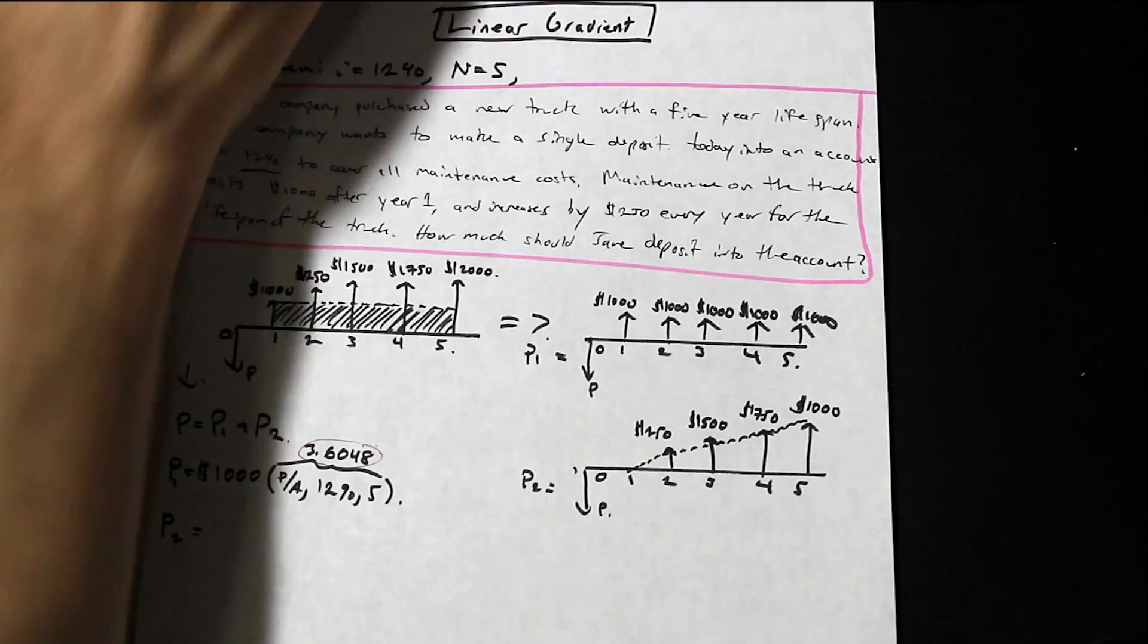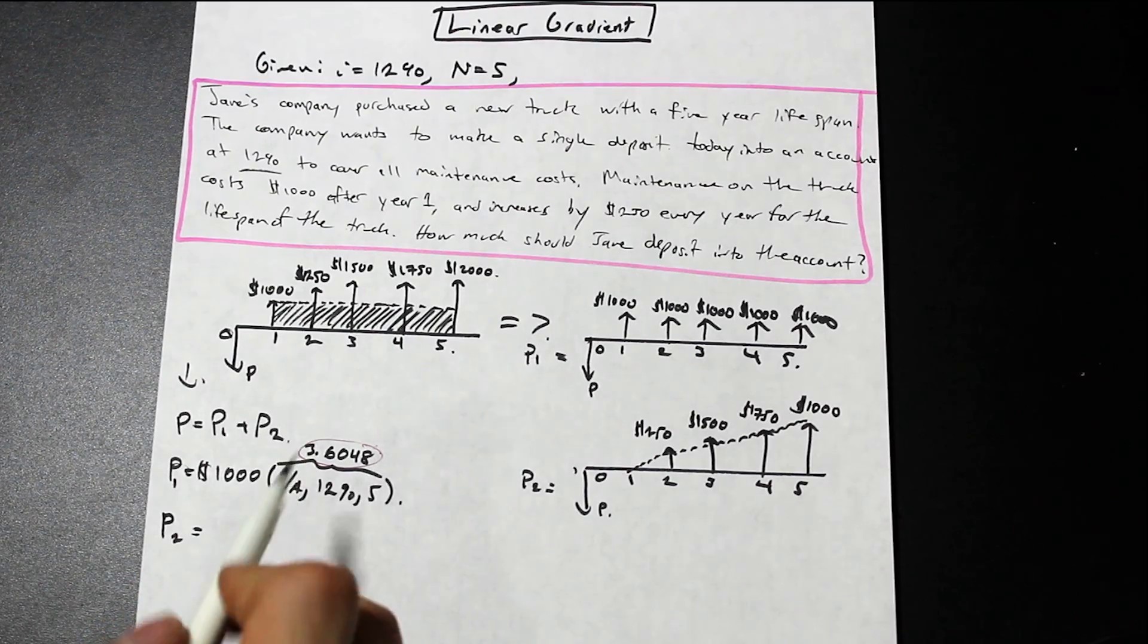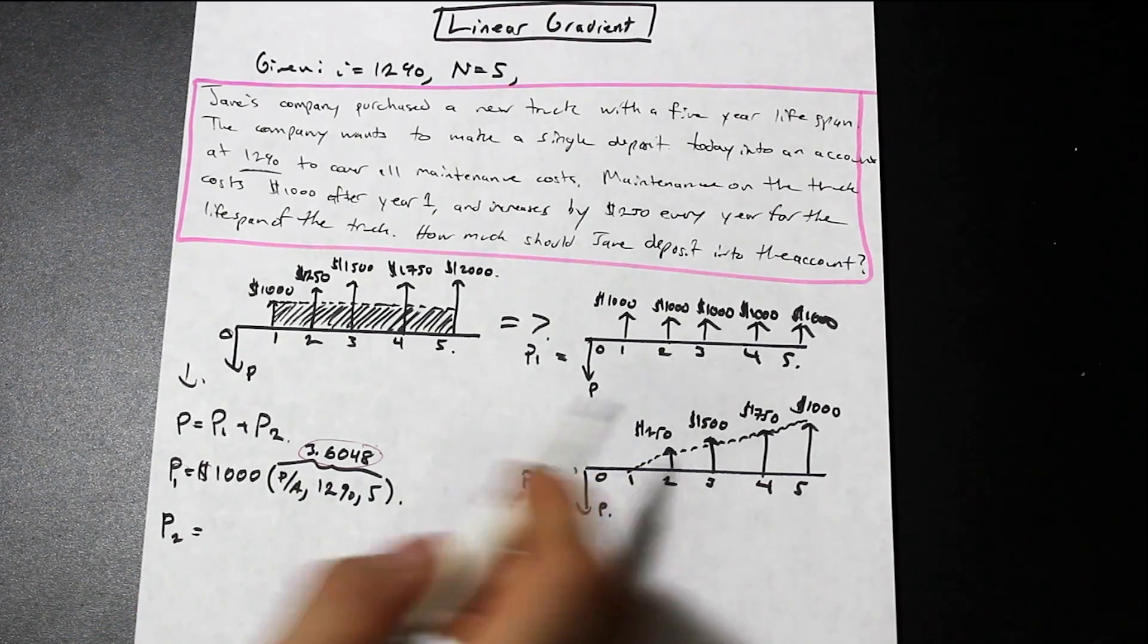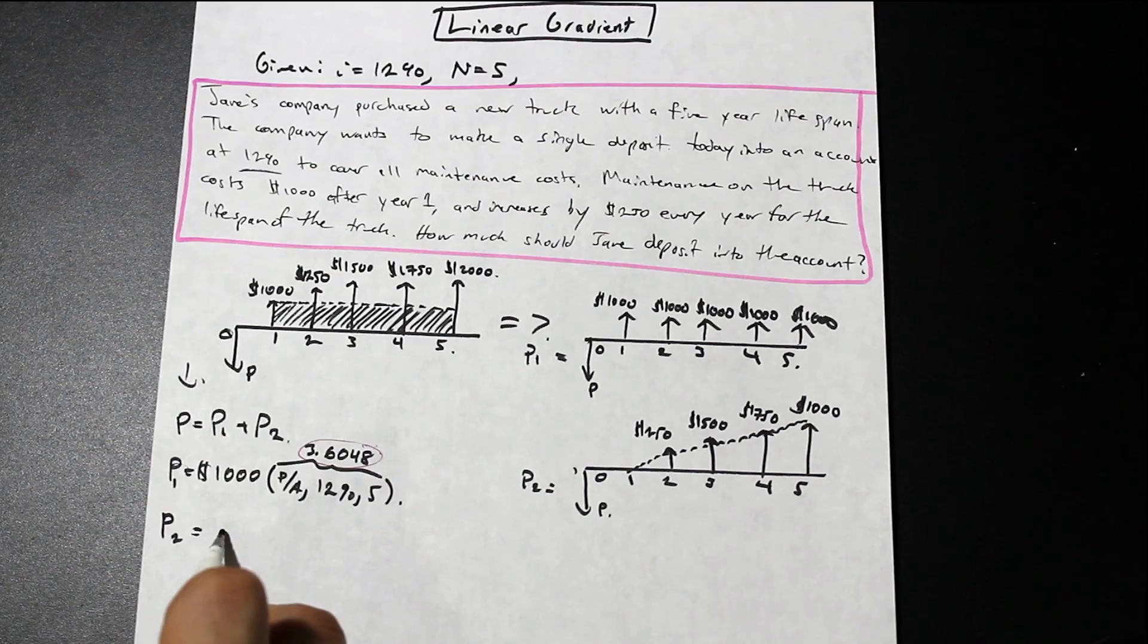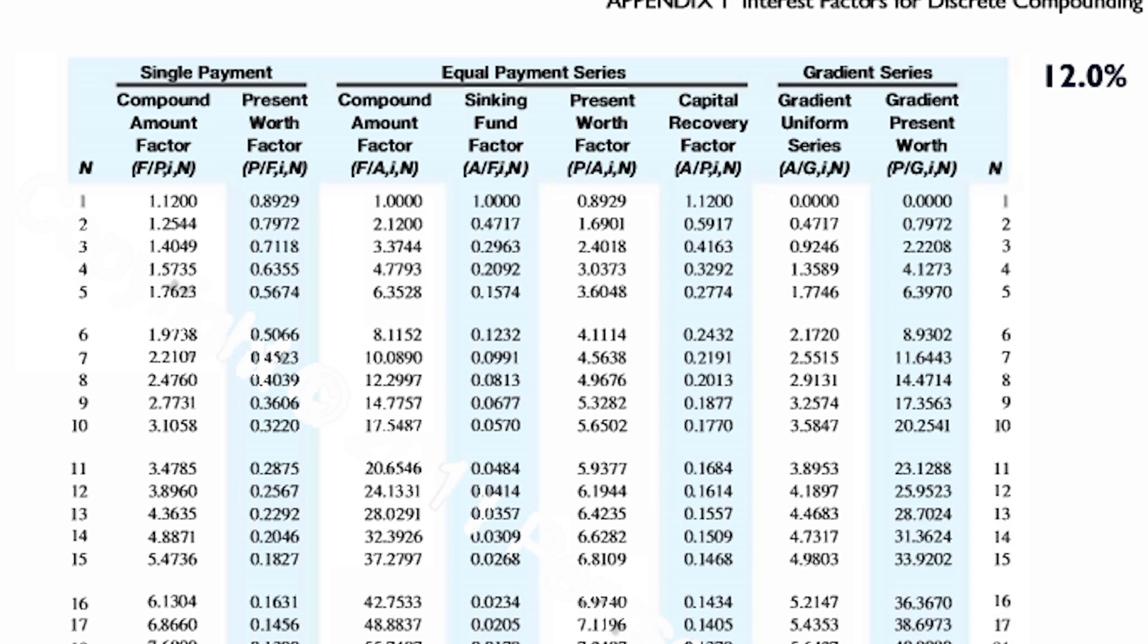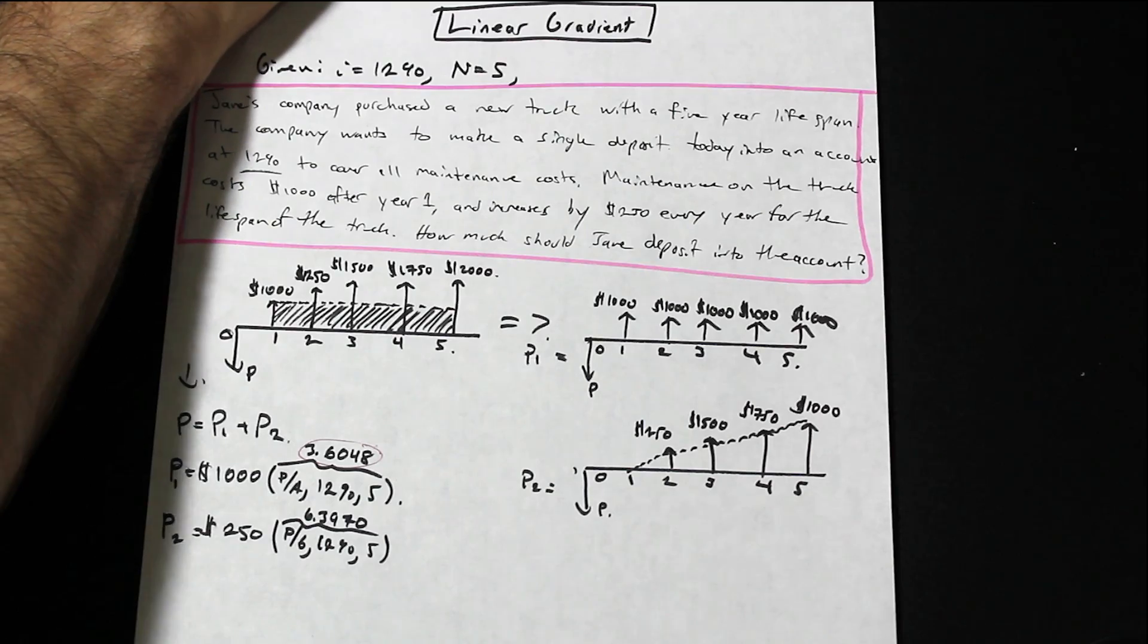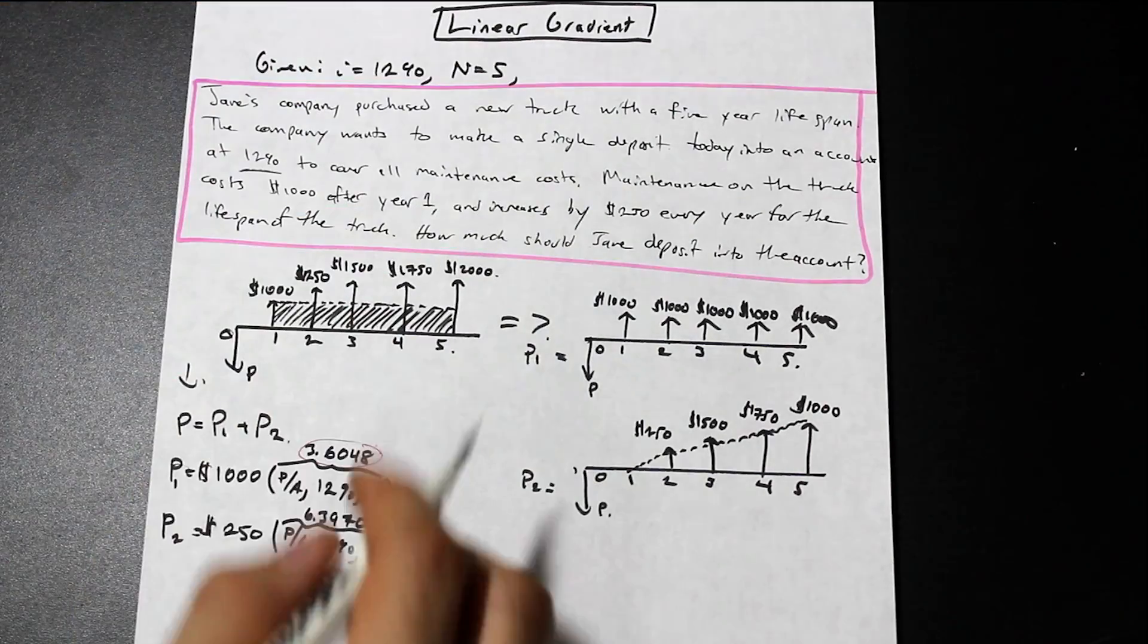So that means, what that means is that we can directly apply the interest tables in order to solve this, P2. So P2, what is our G? Well, we're first going to look for our P given G on the interest table. We have a G value here of 250, because it's increasing at a linear rate of 250. And we are going to look for P given G, I, which is 12%, and N, which is 5. So we have 1, 2, 3, 4, 5 periods. This is simply going to be 6.3970. Very good.